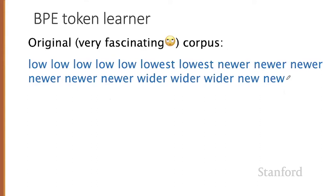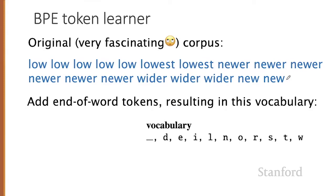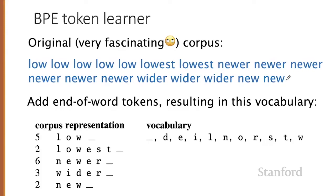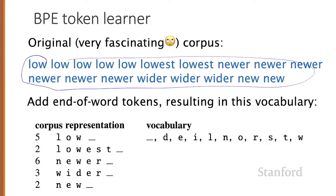Imagine the following corpus: the word 'low' appearing five times, 'lowest' twice, 'newer' seven times, 'wider' three times, and 'new' twice. We take that corpus and add an underbar end-of-word token before every space. The resulting vocabulary contains each of the letters in the original corpus — D, E, I, L, N, O, R, S, T, W — and the new underbar token. For convenience, I'll represent the corpus using counts of different letter strings followed by underbars, rather than copying the full corpus every time.